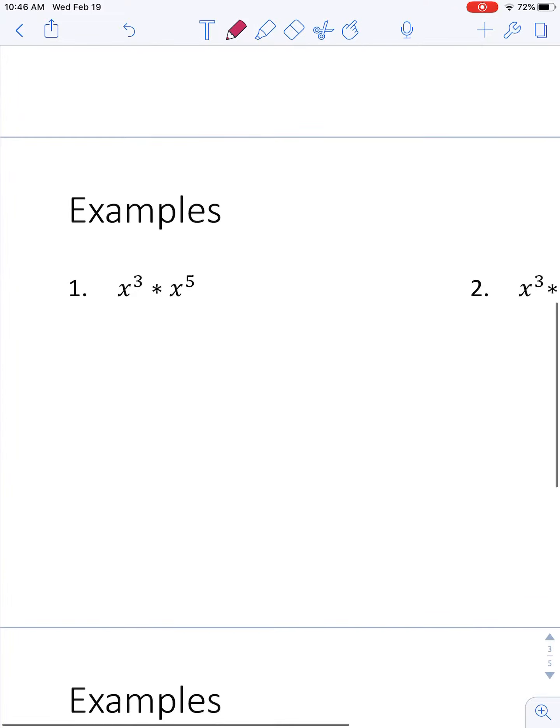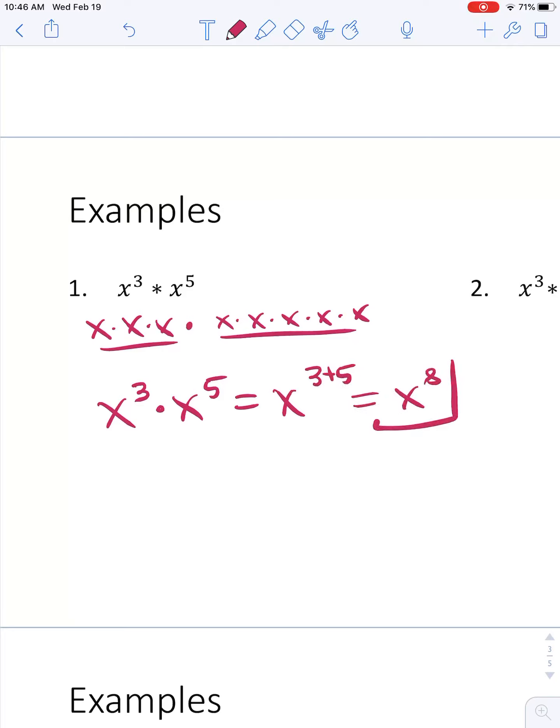So example 1. I got x to the 3rd and x to the 5th. I don't need to write this out, but I'm going to, just so you see it. That means I have 3 x's times 1, 2, 3, 4, 5 x's. So all together I have 5 plus 3, I have 8 x's. The way we would write this really on a test is x to the 3rd times x to the 5th equals x to the 3 plus 5, which is x to the 8th. And that would be our answer.